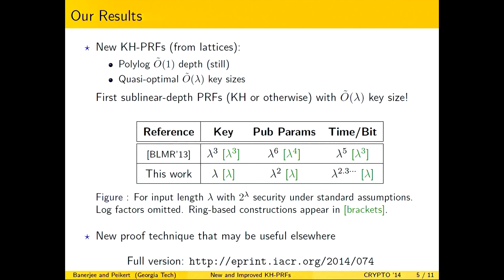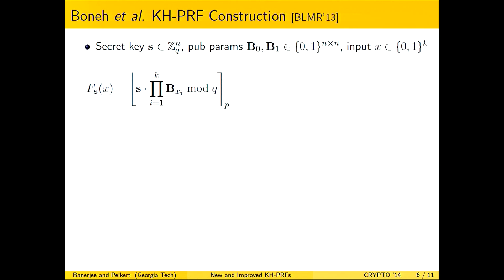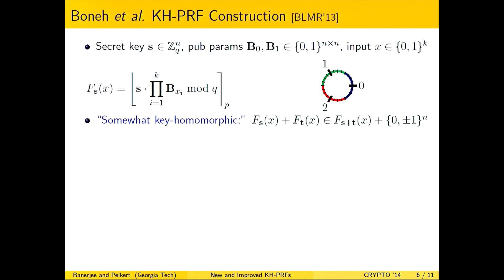We also provide a new proof technique which may find use elsewhere. Before discussing our construction, let me review the Boneh et al. construction from last Crypto. The secret key is a Z_q vector and the public parameters are two binary matrices. The input is a k-bit string. The construction uses the subset product framework: depending on bits of the input you choose the appropriate matrix, multiply them all, pre-multiply with your secret key, and round to a smaller modulus p than q. Rounding maps Z_q values to Z_p values.